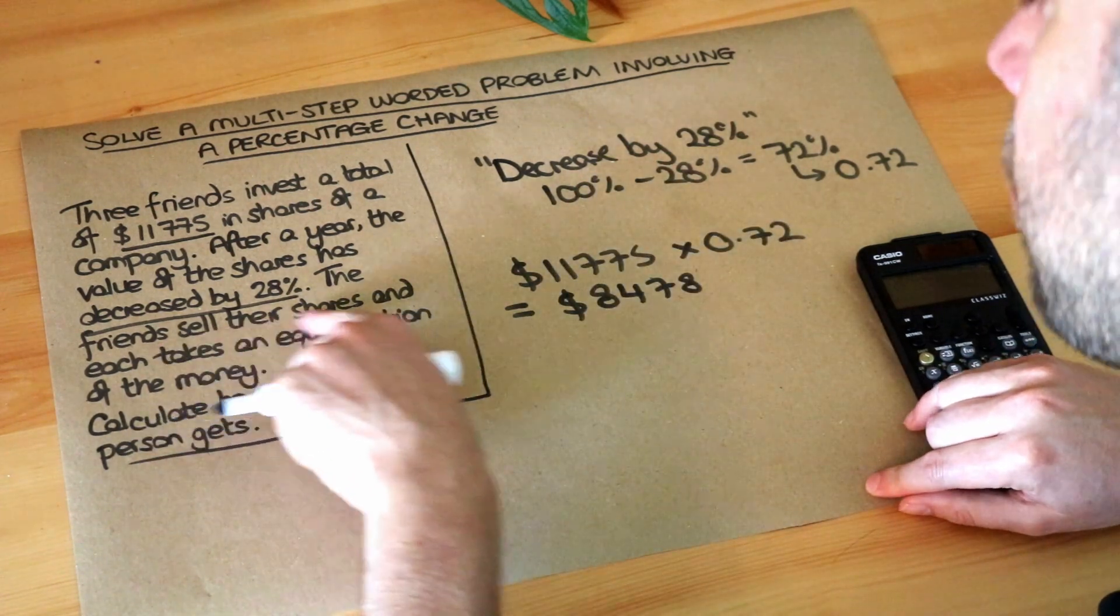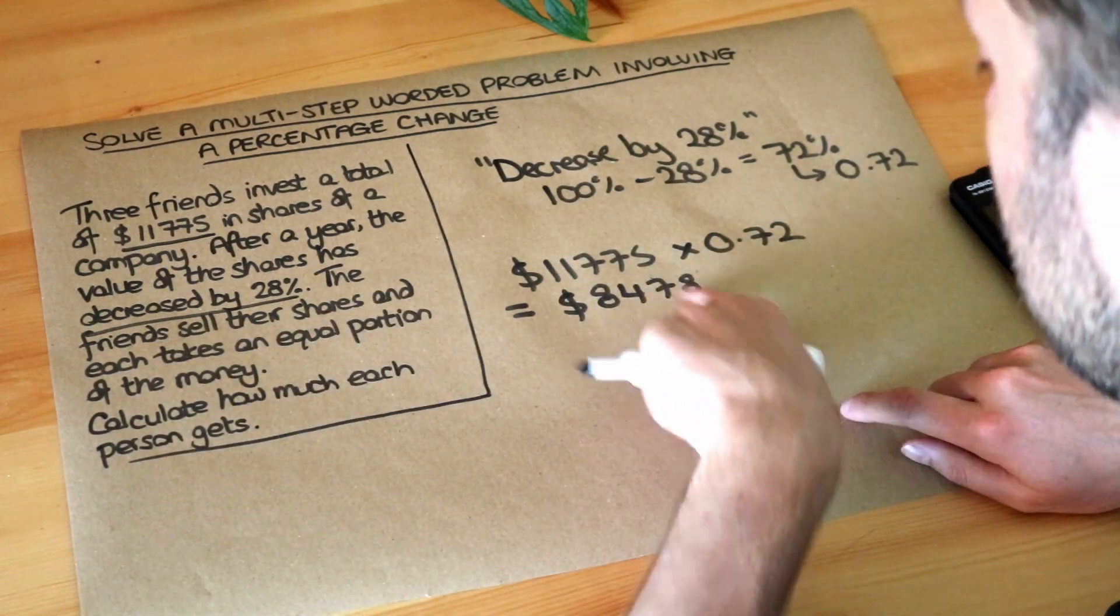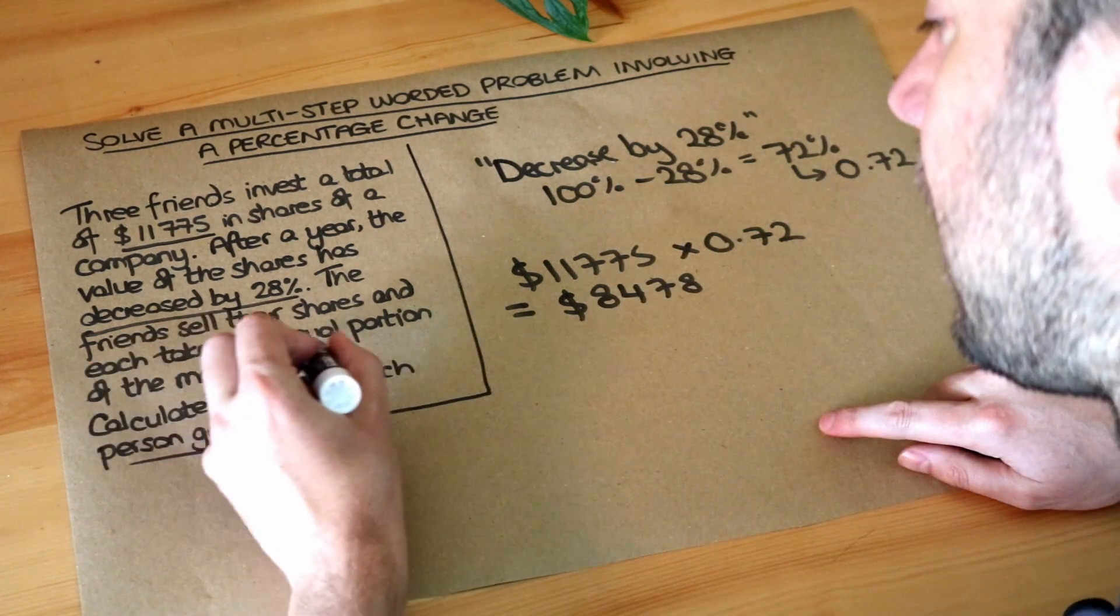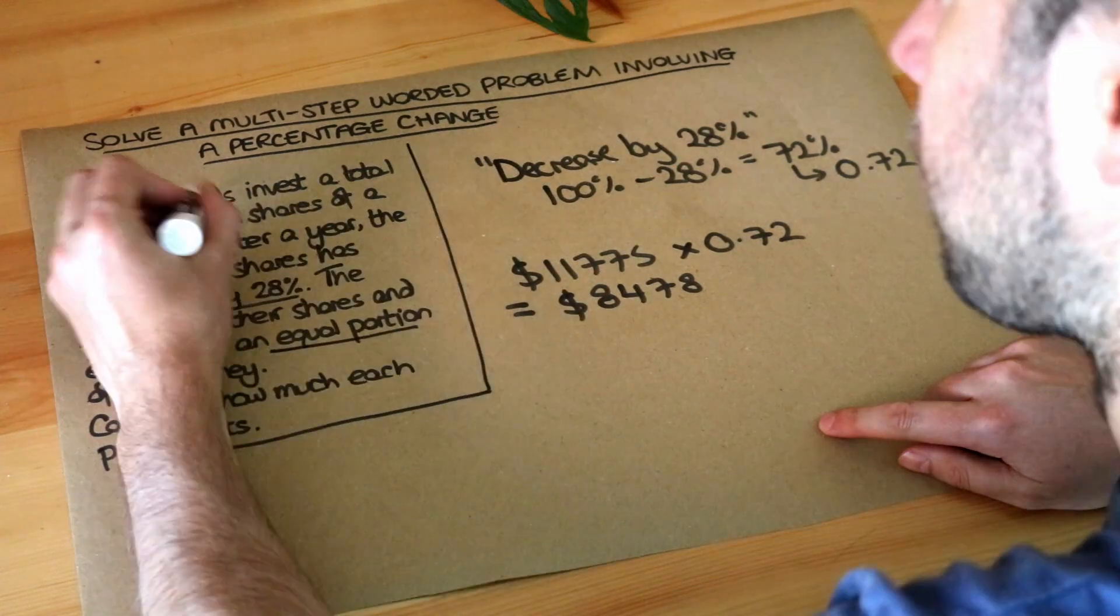So then the friends sell their shares, and they're going to get that money, the new lower amount of $8,478. And each takes an equal portion, and there's three friends.